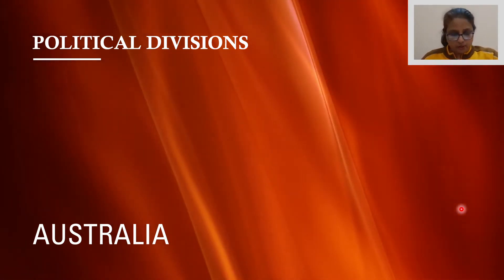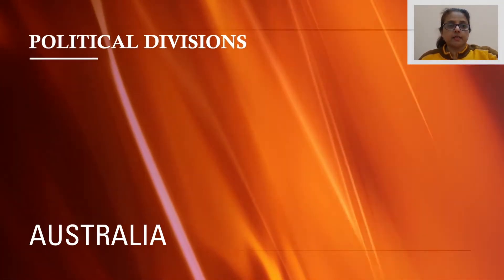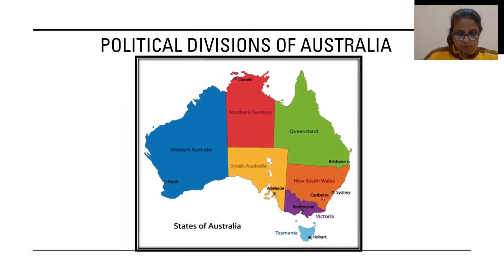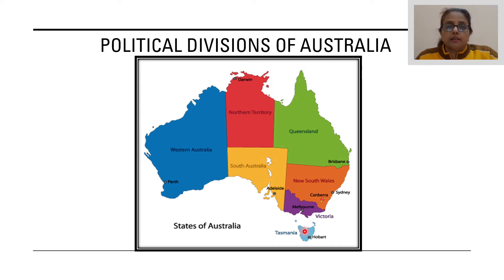As far as the political divisions of Australia is concerned, Australia has six self-governing states and two centrally administered territories. The self-governing states include Western Australia, South Australia, Queensland, New South Wales, Melbourne and Tasmania. The centrally administered territories include the Northern Territory and the Australian Capital Territory of Canberra.